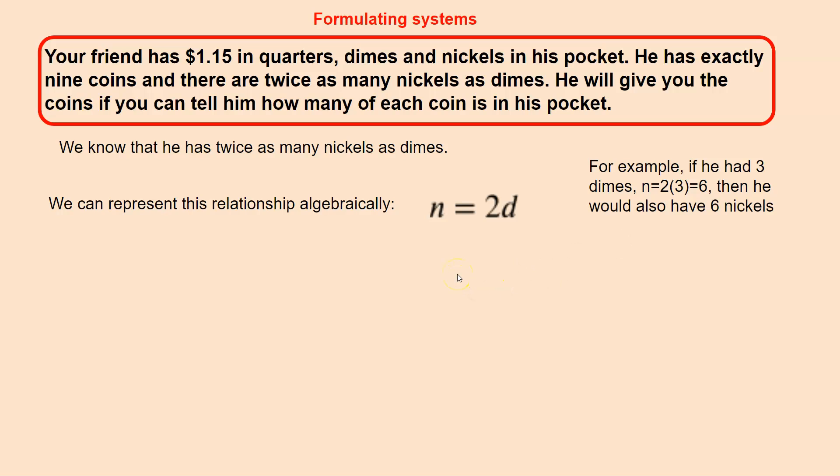So, N is equal to two times dimes. He has twice as many nickels as dimes. I recognize this is a little counterintuitive at first. But we call that a relationship equation.